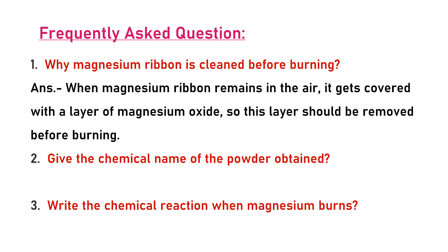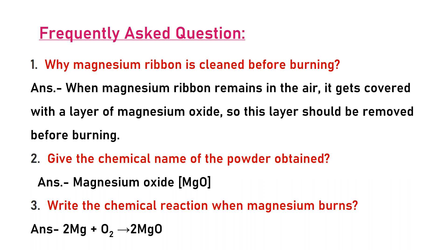Second question: give the chemical name of the powder obtained. The powder name is magnesium oxide; chemical formula is MgO. Write the chemical reaction when magnesium burns: Mg reacts with atmospheric oxygen to form magnesium oxide. Mg is the chemical formula for magnesium, O₂ is the chemical formula for oxygen, so Mg + O₂ → MgO.